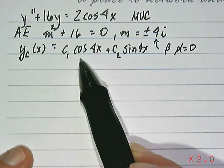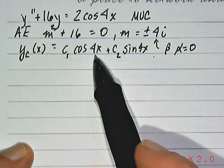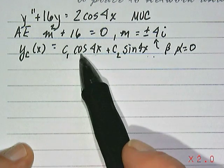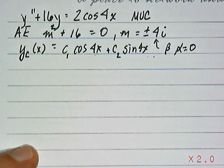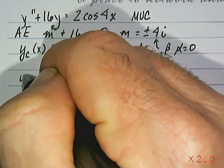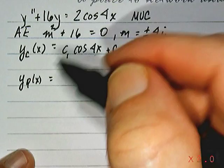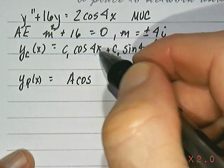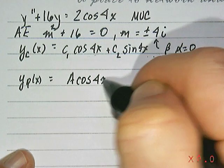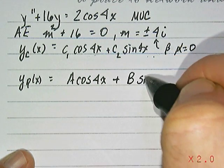Always remember that if you have a cosine here, you need the pairing sine there. And keep the angles the same. Don't drop that 4x when we write the sine there. Now we need to consider a particular solution. So right off the bat, what we could do is look at the right-hand side of the original equation. Notice that it's cosine 4x, and we could say, according to MUC, we should try something of the form of a constant A cosine 4x plus B times sine 4x.